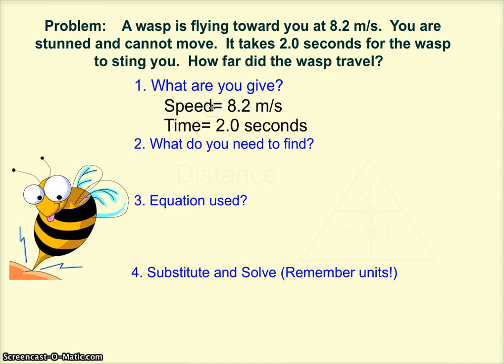What are you given? Well you are given the speed this time because we have meters per second. We are given the time of two seconds. What do we need to find? We need to find the distance.